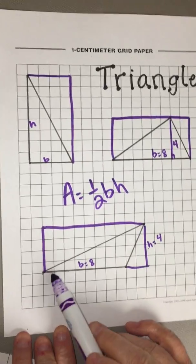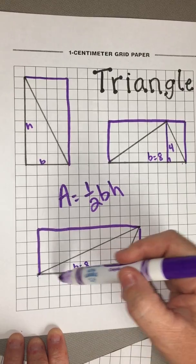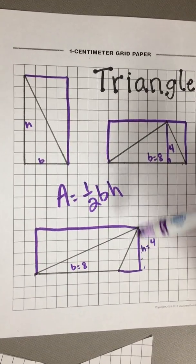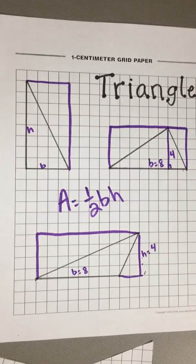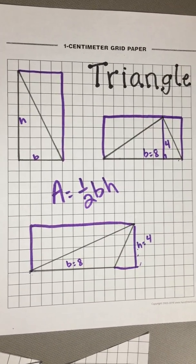So on any triangle if you know your base, your base could be across here, across here, or across the bottom here. Take your base and then your height, multiply them together and it's one half of that. Alright you're about to do some practice problems on your video.